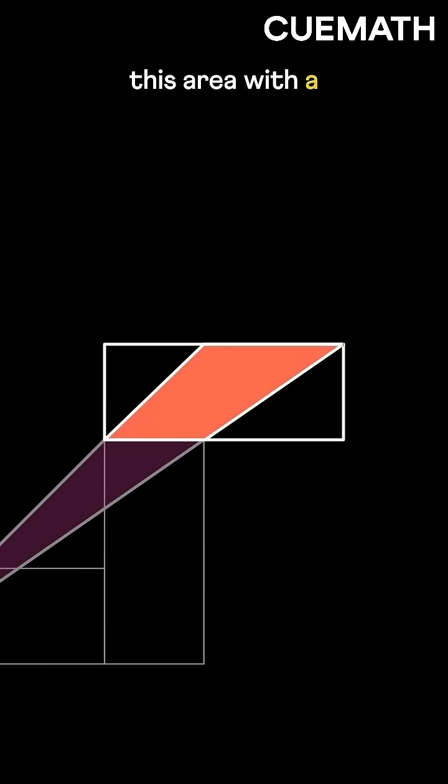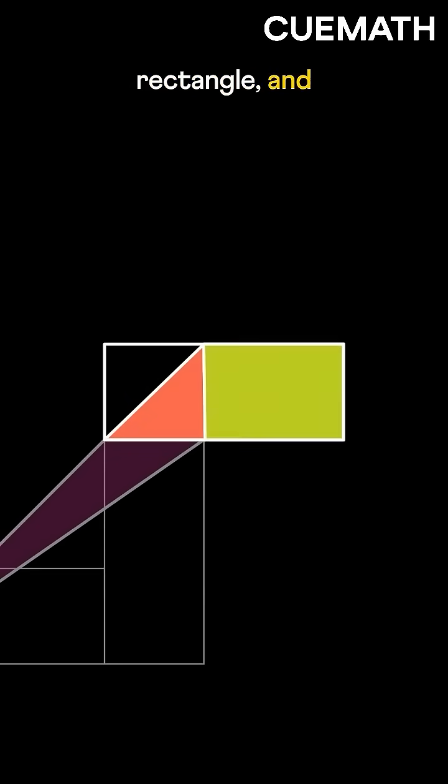Let's divide this area with a line. Now we have a square, a rectangle, and two small triangles.